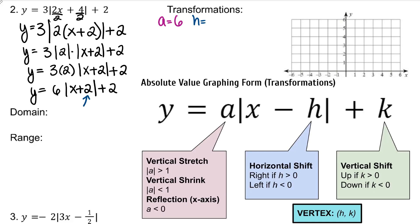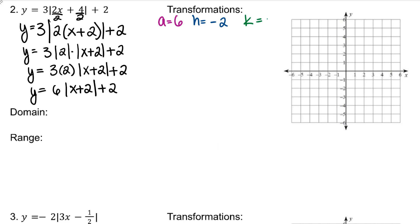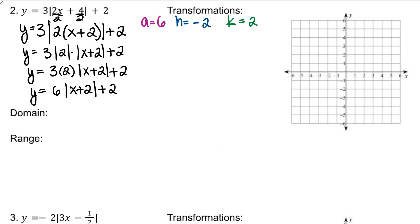Our transformations: A is positive 6. It's tempting to say that H is positive 2, but H is actually negative 2. Because if I were to rewrite this group as x minus something, x minus negative 2 is the same as x plus 2. Therefore, because our graphing form has a minus in it, H is actually negative 2. And K is positive 2. Remember, H is the tricky one; K is really straightforward. This means our vertex is (negative 2, positive 2).